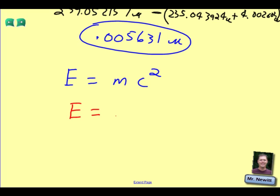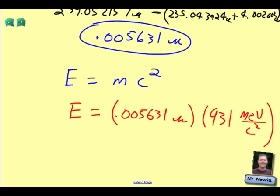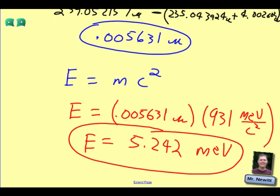And so, my energy could actually be calculated by taking that mass in the atomic mass units and multiplying it by 931, and that will put this in mega electron volts over c squared. That conversion will then go ahead and give me my energy in mega electron volts. And so, when I calculate that out, I get 5.242 mega electron volts of energy that are released during that decay.